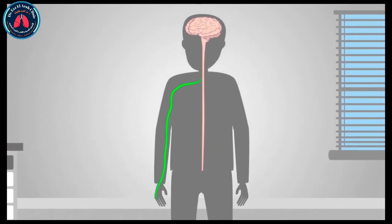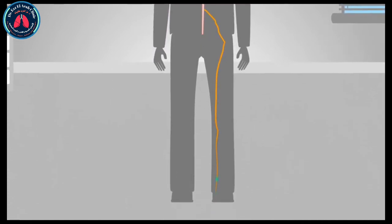Motor neurons transmit signals from the brain to tell muscles what to do. So what happens when the nervous system is disrupted?